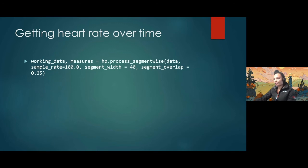HeartPy also supports achieving heart rate over a longer period of time where the heart rate could increase or decrease, such as when exercising or cooling down after exercise. To retrieve the heart rate over a longer period of time, the function process_segmentwise can be called, where you can define segments and it will calculate the beats per minute.